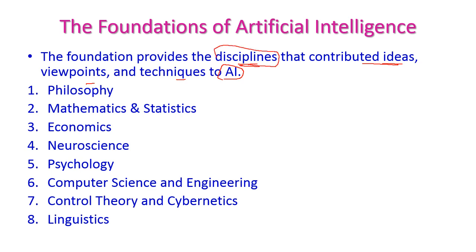The term discipline means the knowledge about various subjects — knowledge from the CSE department or from other departments. The basic knowledge required for learning artificial intelligence, for getting the ideas, viewpoints and techniques, includes philosophy, mathematics, economics, neuroscience, psychology, computer science and engineering, control theory and cybernetics, and linguistics.